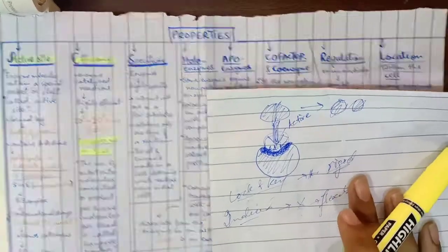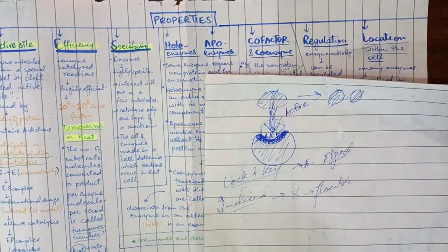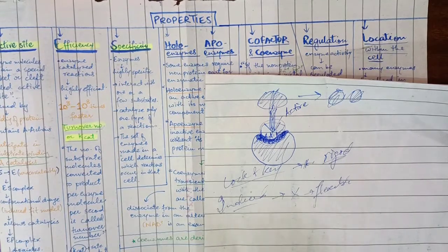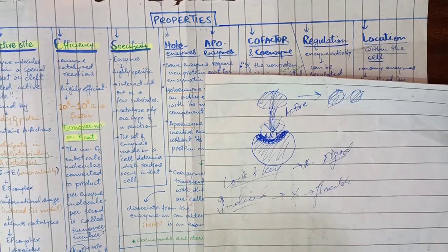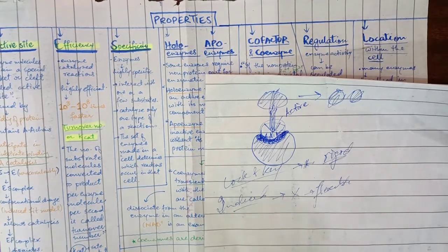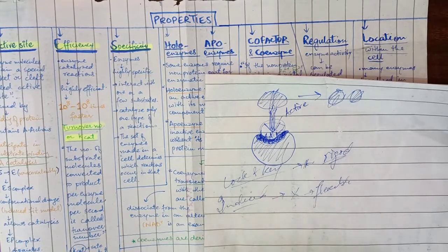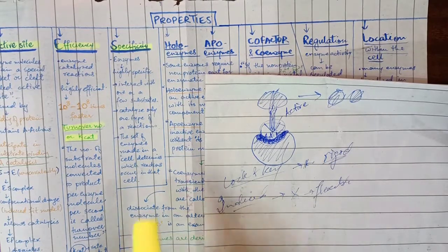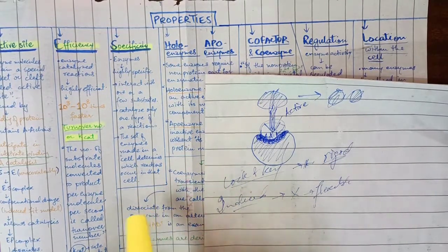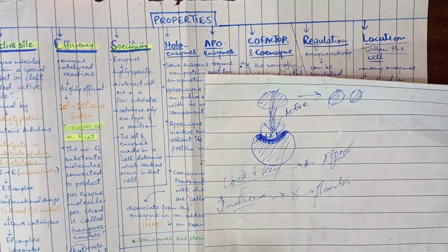The third property is that enzymes are highly specific. They work with specific substrates, catalyzing only one type of reaction. For example, if an enzyme does dehydrogenation, it will only do that type of reaction. The set of enzymes made in a cell determines which reactions occur in that cell.